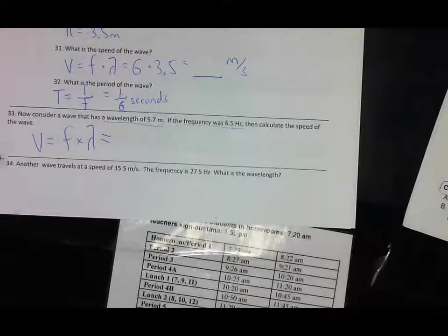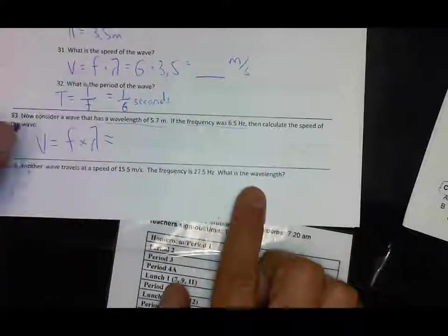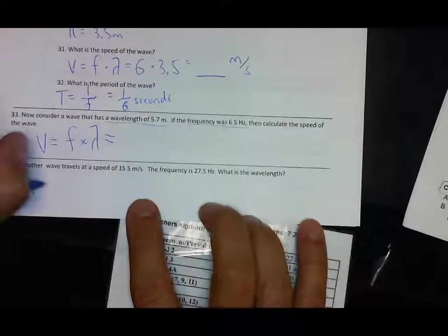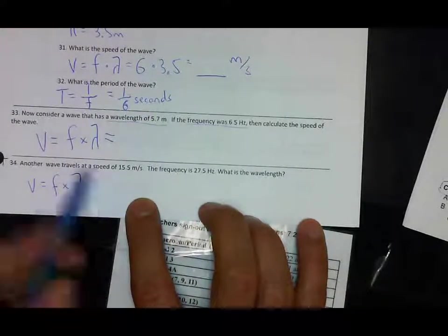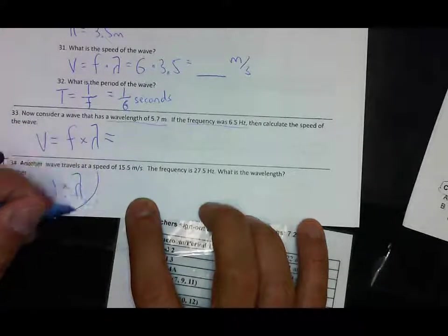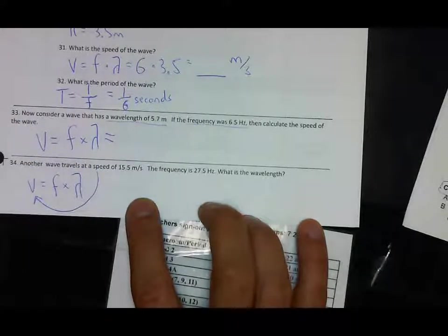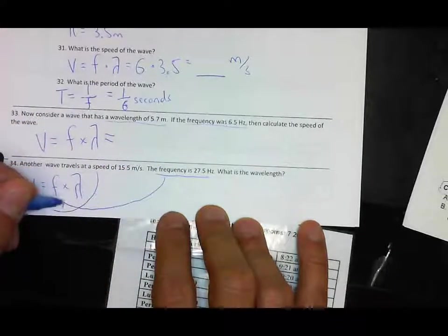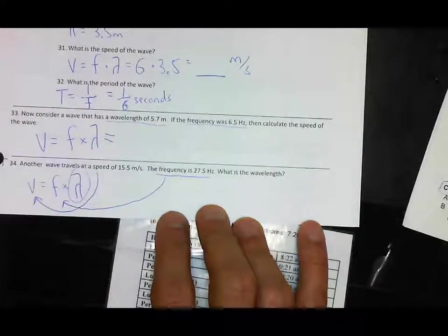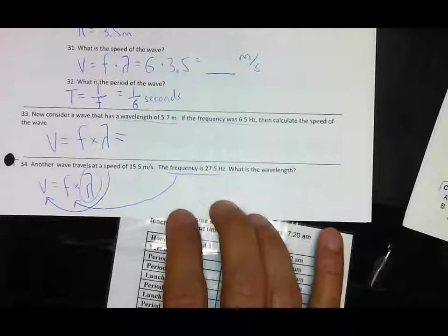Then here you have the same thing but they're asking you to calculate wavelength. So you have a velocity or speed, you have a frequency, so they're asking what is your wavelength.